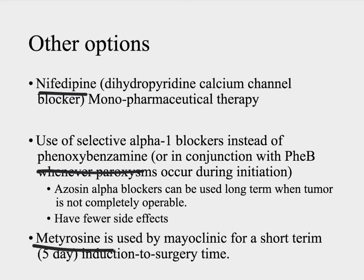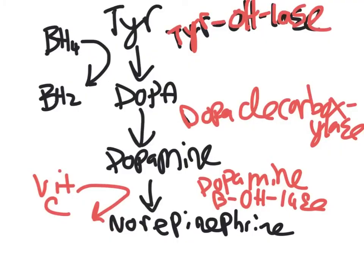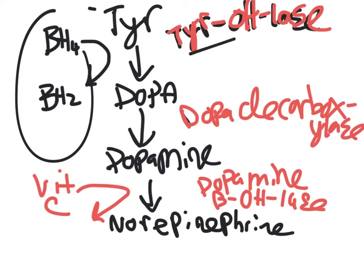Metyrosine is the third option, and the reason we have this option is because it's a lot faster. The Mayo Clinic has been using this and can get to surgery within about five days. To make the catecholamines, you're going to convert tyrosine into DOPA — that's with tyrosine hydroxylase using tetrahydrobiopterin, converting it to dihydrobiopterin. Then from DOPA, you go to dopamine, which requires DOPA decarboxylase. From dopamine, you go to norepinephrine — this is a vitamin C-dependent process using the enzyme dopamine beta-hydroxylase.